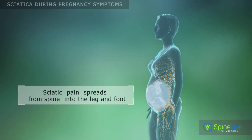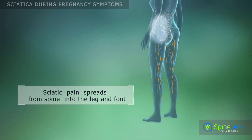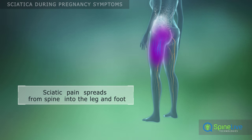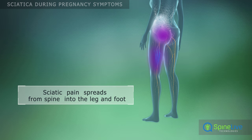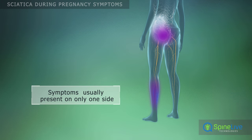Sciatica pain starts in the lower spine and radiates downward into the buttocks, back side of the leg and into the foot. Sciatica typically only affects one side of the body at a time.